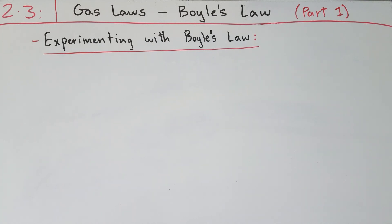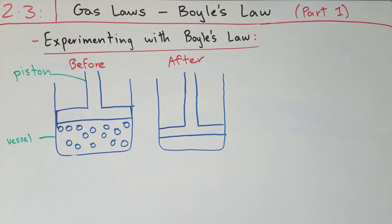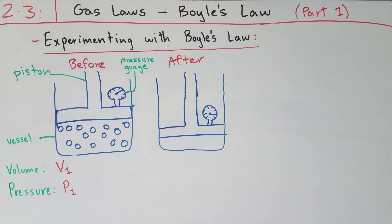Now we're going to look at Boyle's law from an experimental approach. A common example is a piston system. Let's say you had two vessels with two pistons, and you filled the first vessel with a certain volume of gas. We'll call the volume of this first vessel V1 and the pressure P1. A question to consider: what measurement device could we use to measure the pressure of the gas in the vessel? One way is by using a pressure gauge, which you could attach to the system.